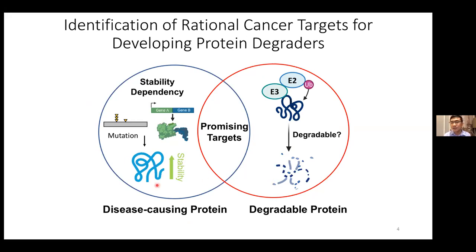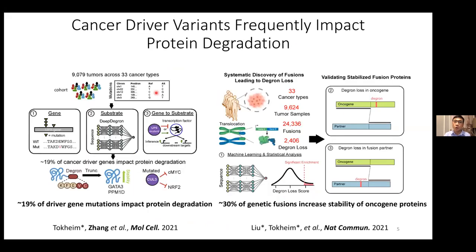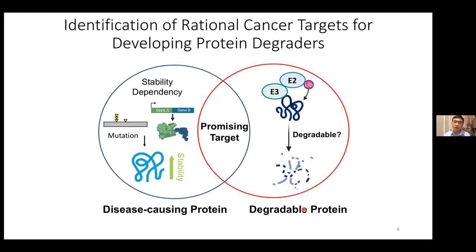In cancer, disease-causing proteins are the cancer driver genes. Our previous study investigated the impact of cancer driver variants on protein degradation and found that about 19% of driver gene mutations impact protein degradation, and about 30% of genetic fusions lead to degron loss in oncogene proteins, further increasing their stability. These dysregulation events could inform candidate targets for future drug development. The second question is whether those targets are degradable by targeted protein degradation approaches — that is also the focus of this talk.